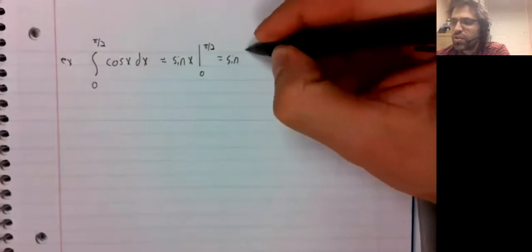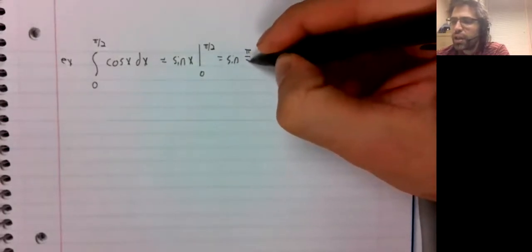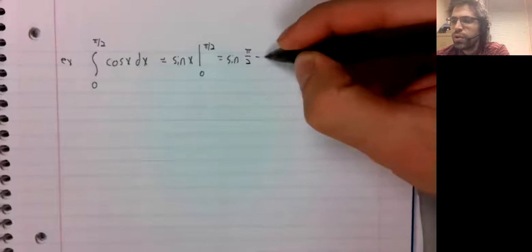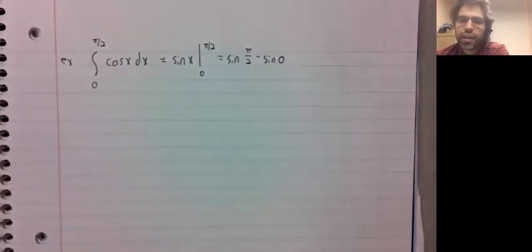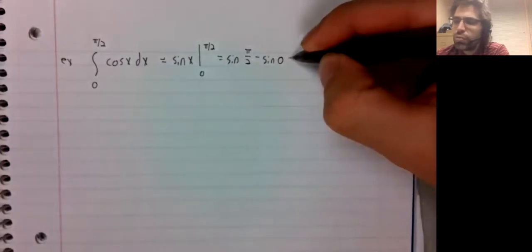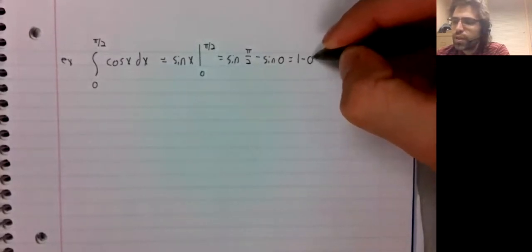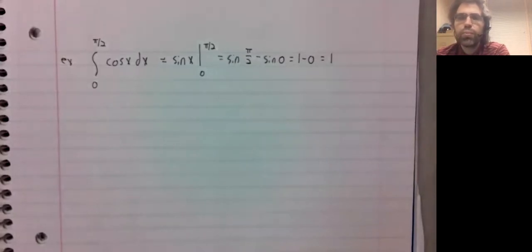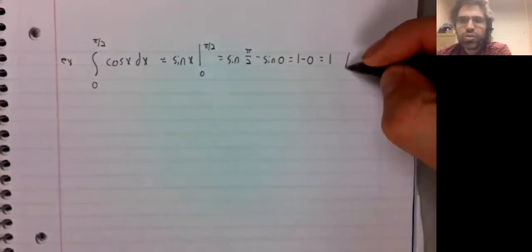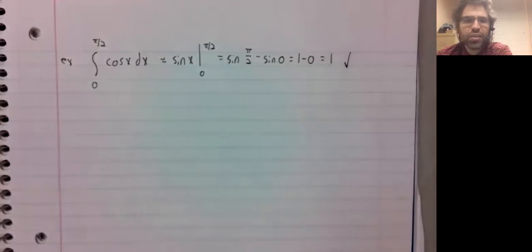That is, it's the sine of pi divided by two minus the sine of zero, which is one. So there's our first definite integral successfully computed using the fundamental theorem.